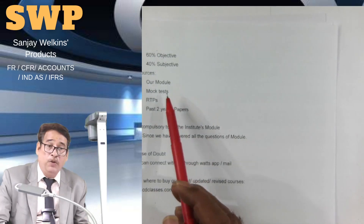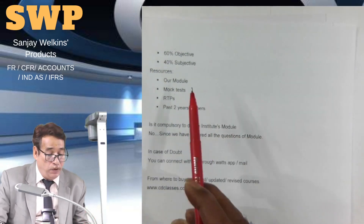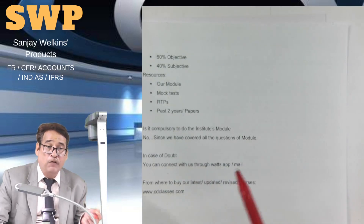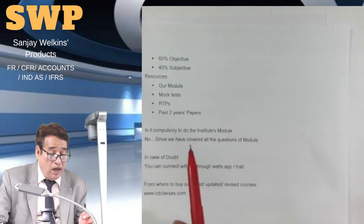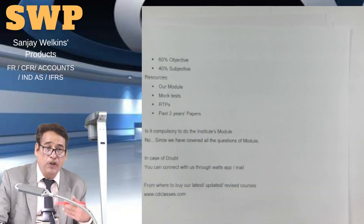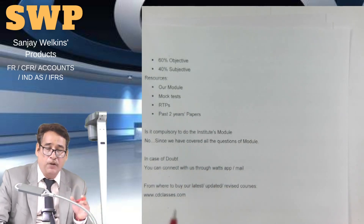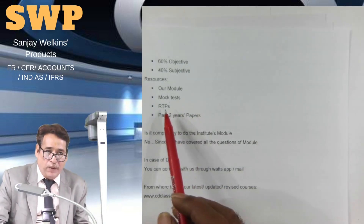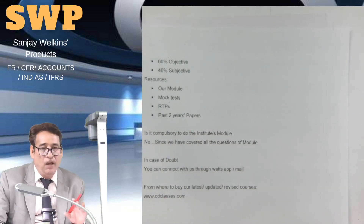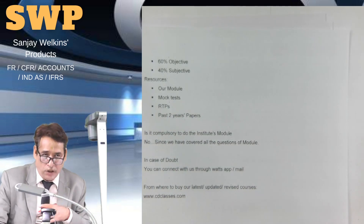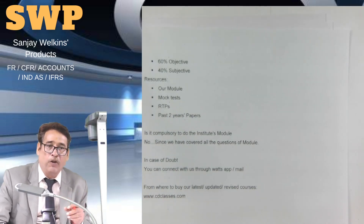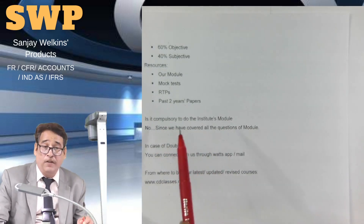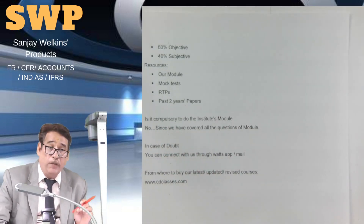As far as resources are concerned, simply go through our module — not the institute's module. We have covered every bit of the module, and moreover there are some printing mistakes and some updates not incorporated in the institute's module. Simply bank upon the tutorial and material we are providing. Once you have completed our tutorials and module, your duty is to do at least two mock tests, two revision test papers, two RTPs, and two past year papers. After that, you need not worry — you can have assurance that you will come out with flying colors.